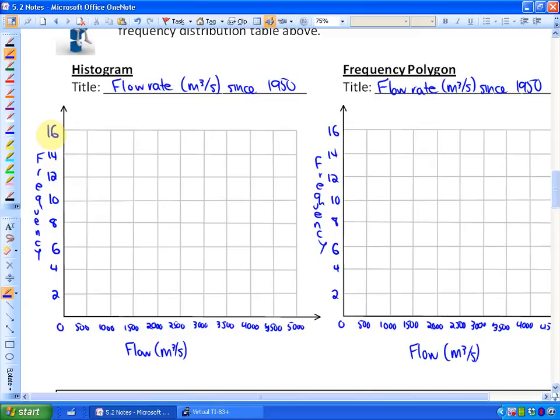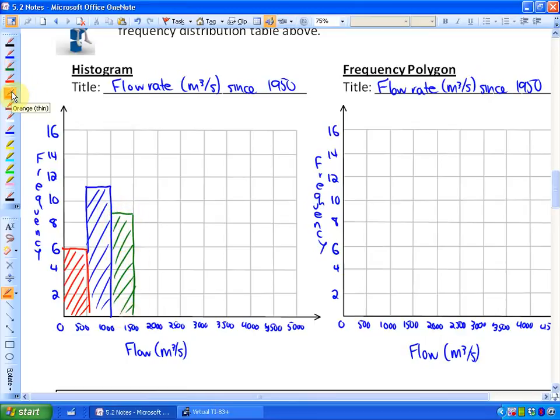So now what we're going to do is just take all of those frequencies from each category and fill it in. And I'm almost done here. So here's, there were 6 between 0 and 500 as a flow rate. There were 11 in the next category. The following category had 9. There were a total of 14 years where the flow rate was between 1500 and 2000.